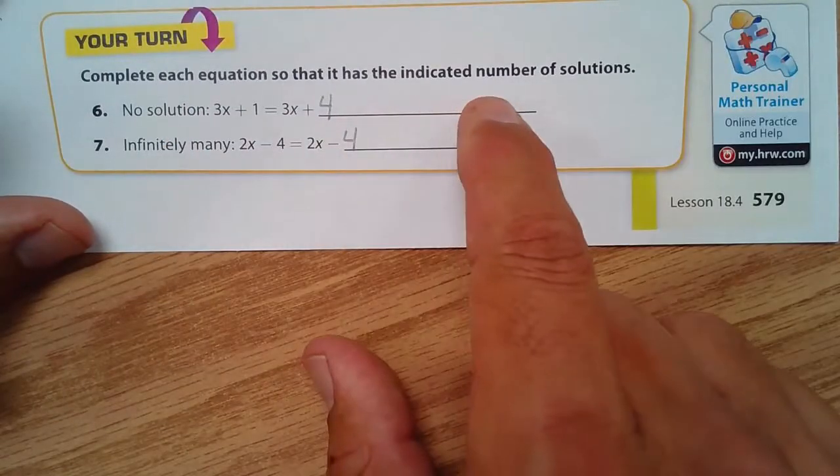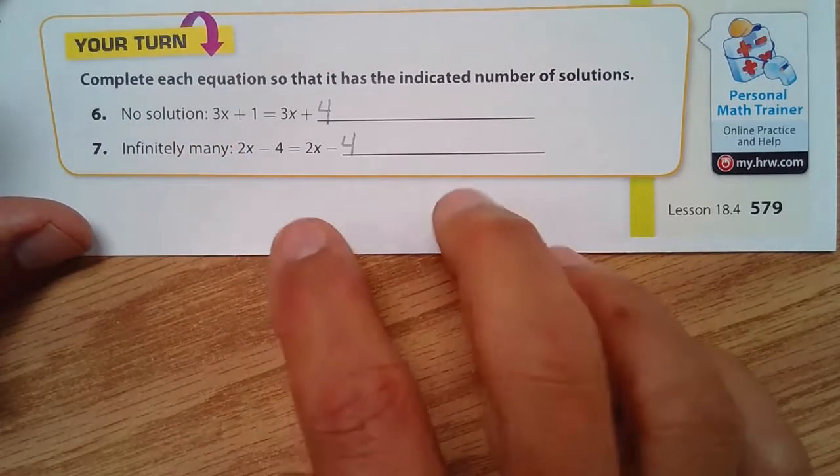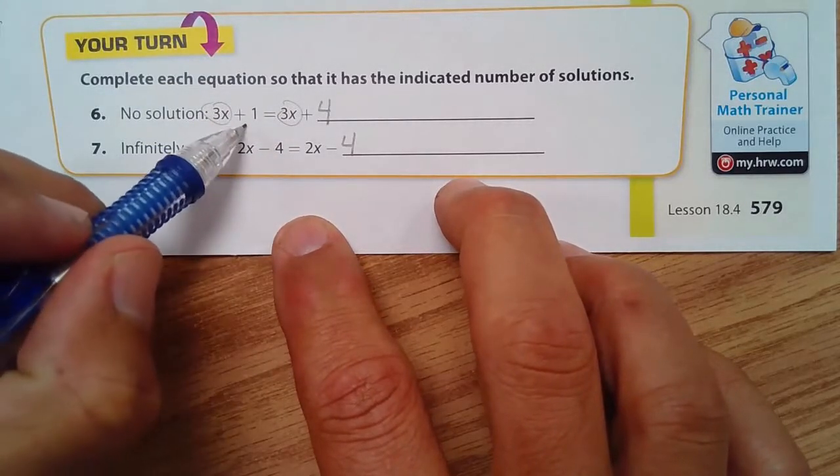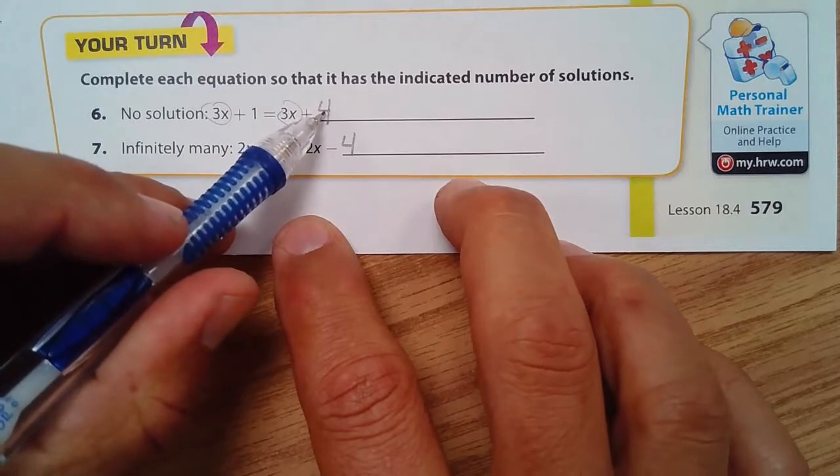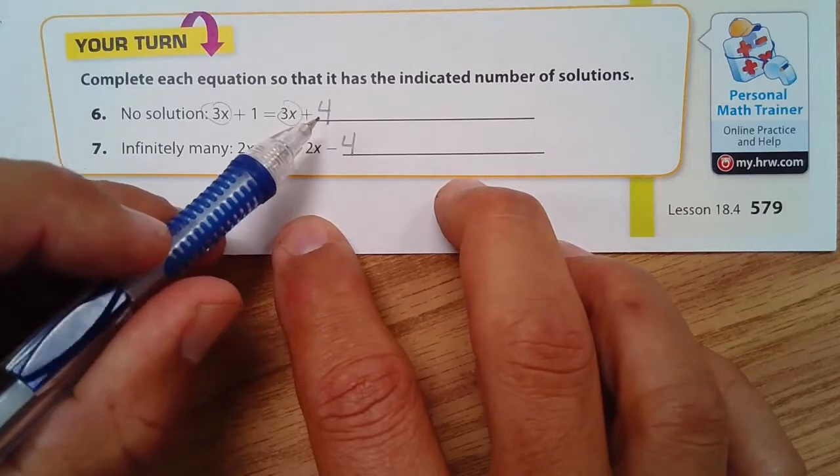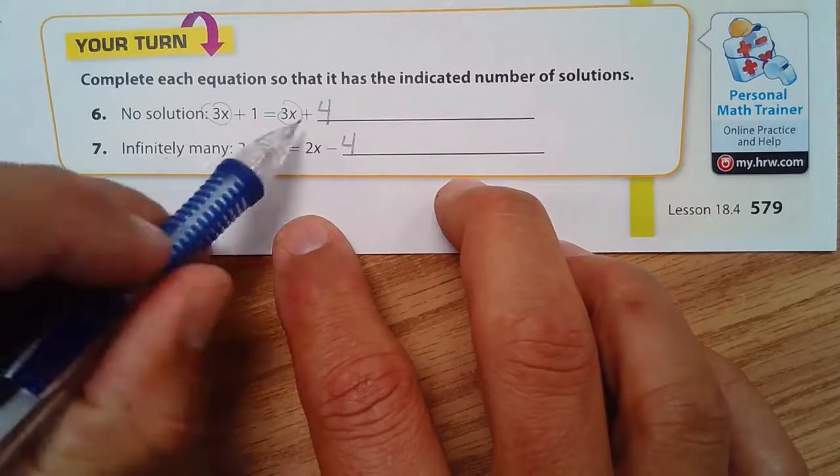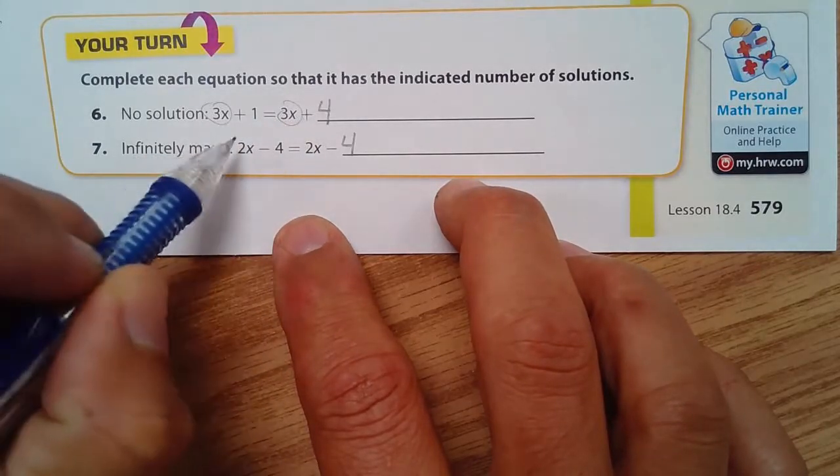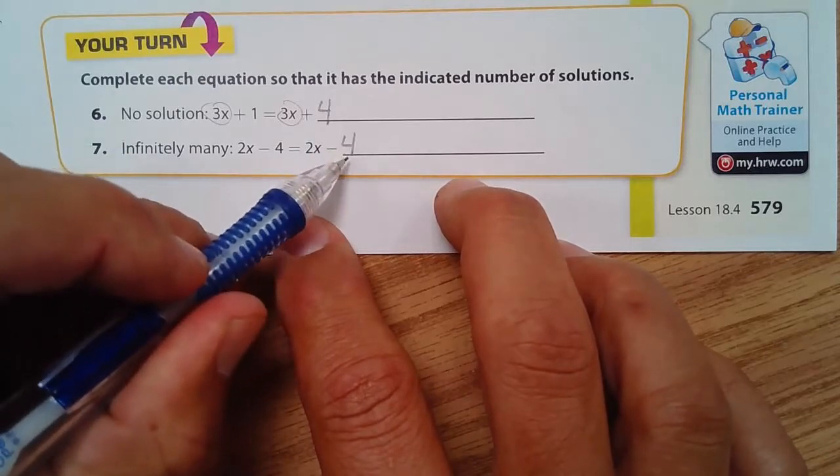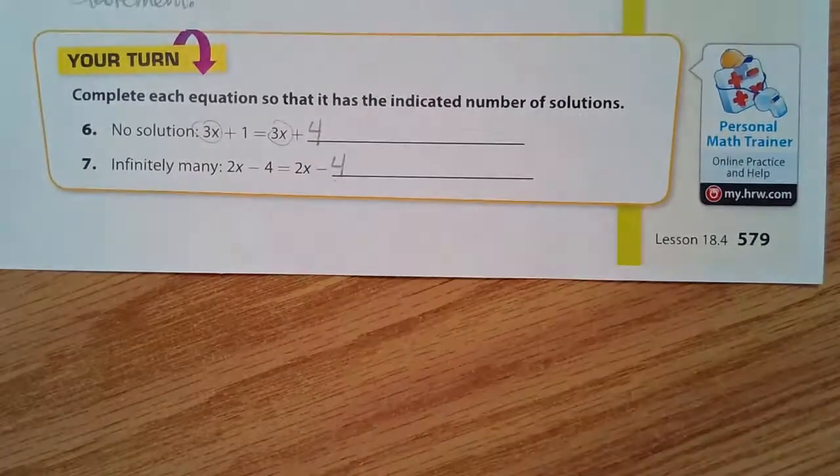Complete the equation so that it has the indicated number of solutions. Okay, we want something with no solution. 3x plus 1. Okay, so I have the 3x and that's the same. So, if I add 1 and maybe if I add 4, this could be any number. It could be 8, 5, 256, whatever it is. As long as it's not 1. Because if it's 1, then you've created something with an infinite number of solutions. And by the way, infinitely many solutions, 2x minus 4 equals 2x, that has to be 4. It can only be 4. If it's anything else, you'll have no solution. And that's what you have to know about.